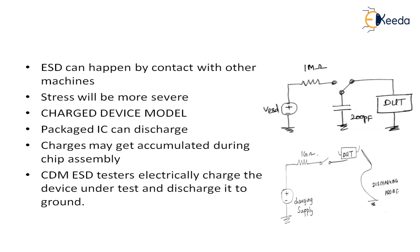The purpose is electrically charging the device under test and discharging it to ground. Whatever charge is present in the device under test will be discharged by using a discharging probe. Previously, because of a human finger the ESD happened; again, through another machine, the ESD occurs. The ESD may also happen in the device itself. I can provide a charging supply — the device is charged with a lot of charges that may spoil it, so I use a discharging probe which can electrically charge the device and discharge it to ground.